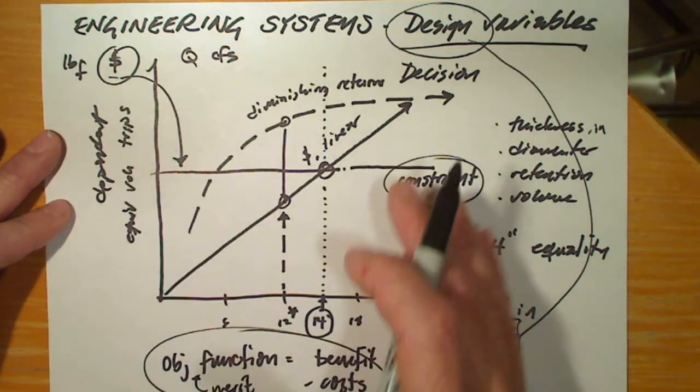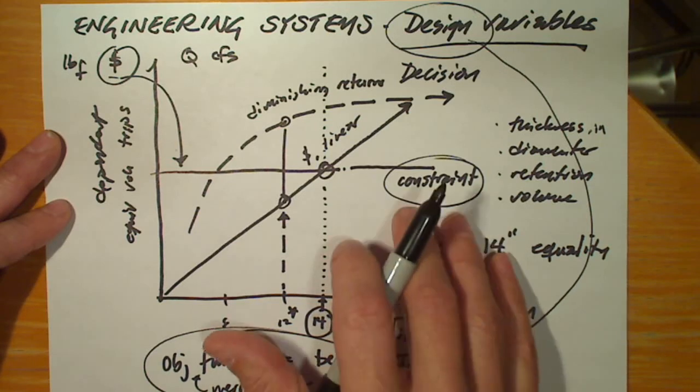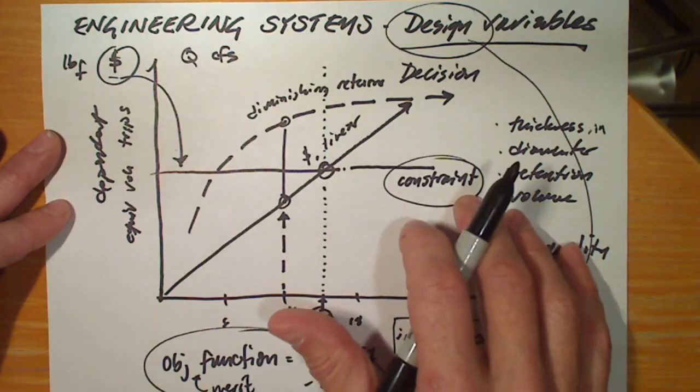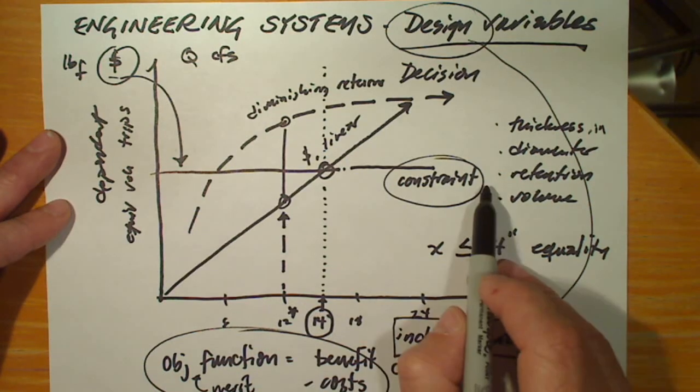And it could be for reasons of cost, or geometry, or time, or some other resource. Because we live in a finite world, all of our engineering discretion, that is, all of our design variables, are subject to these constraints.